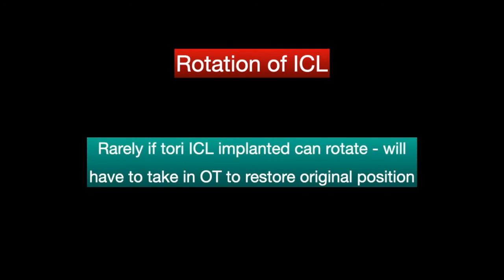In such a scenario, the lens haptics may have to be rotated or the lens may need to be exchanged. If a patient has had a toric ICL, it is meant to remain in a particular axis in the eye. Occasionally it may rotate, reducing the effect of the ICL, and in such rare instances the patient might have to be taken to the OT to restore the original orientation.